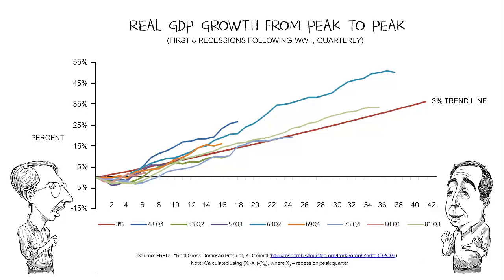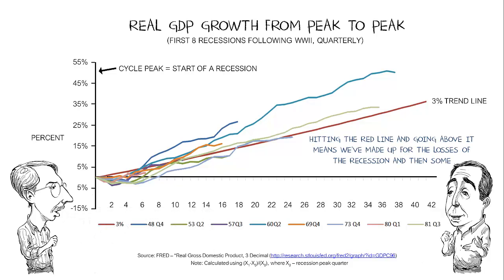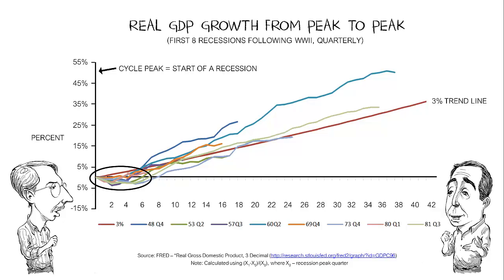The horizontal axis measures the number of quarters after the cycle peak. At the extreme left, that's where the peak begins, and four indicates that we're four quarters into this economic downturn or into the recovery. The vertical axis measures the percent difference between GDP at any point in time compared to what it was at the cycle peak. Real GDP dipped down, and then you get a period of supernormal growth in which you get back to the 3% trend line. We've had 3% growth since 1970, almost more than 40 years. The path to look for is dipping down below where you were before, and then a period of supernormal growth in which you get back or possibly above that 3% trend line. That's a recovery.